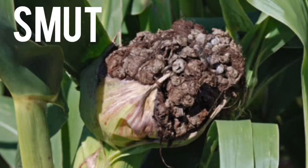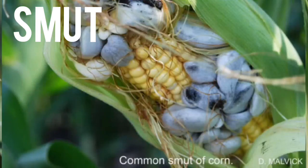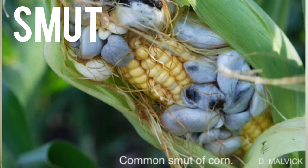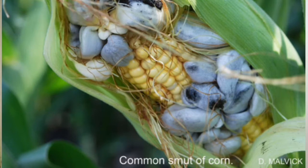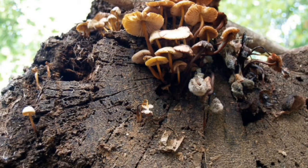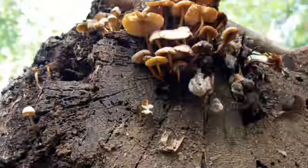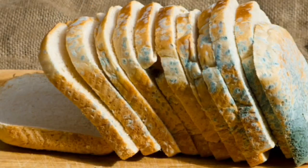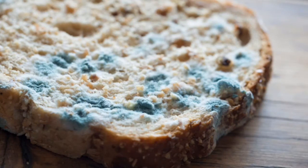Fungi do not produce flowers, so they are non-flowering plants. Some fungi grow on dead decaying materials to obtain food and are referred to as saprophytes. An example is mold which grows on bread.